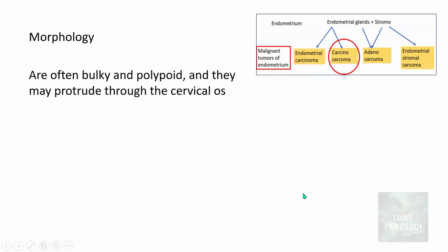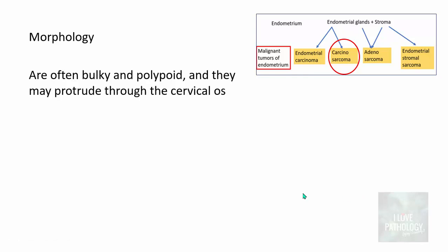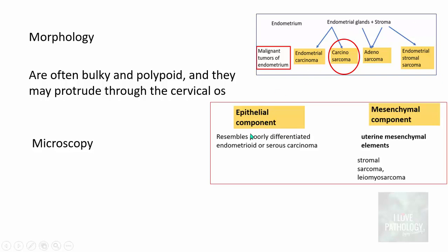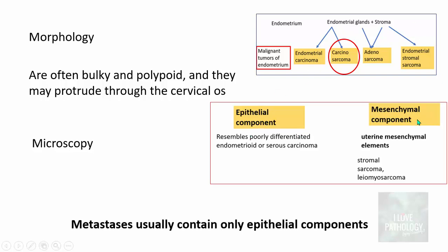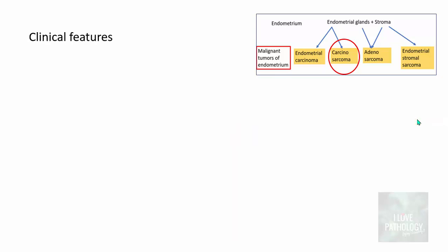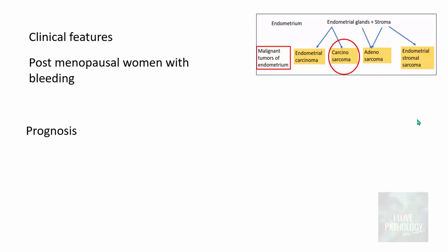Morphologically, carcinosarcomas are often bulky and polypoid and may protrude through the cervical os. Microscopically, both epithelial and mesenchymal components are present; importantly, metastases from these tumors usually contain only the epithelial component. Patients typically present as postmenopausal women with bleeding. Prognosis is extremely poor, depending on depth of invasion and stage, but presence of heterologous elements generally indicates a poor prognosis.